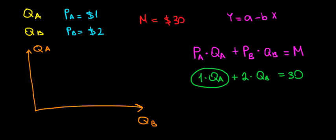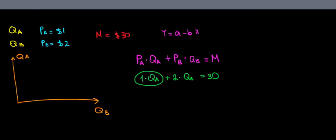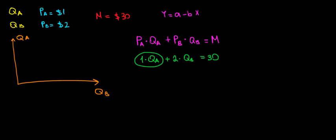So let's keep quantity of apples on one side and take everything else to the other side. Now we have 1 times quantity of apples equals 30 minus 2 times quantity of bananas. So quantity of apples equals 30 minus 2 times quantity of bananas.